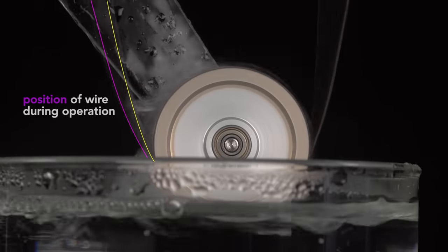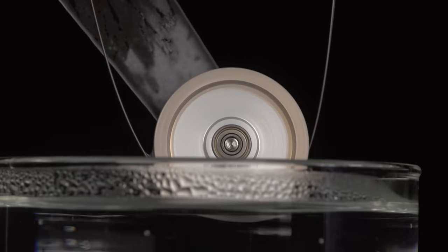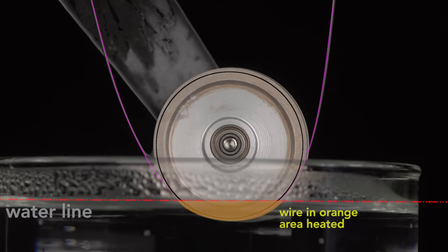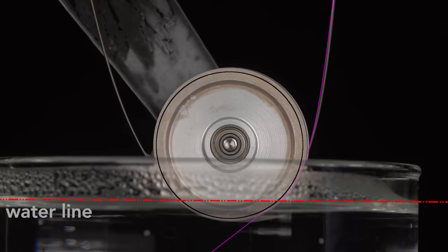This happens because when the bottom wheel comes into contact with the hot water, the section of the wire highlighted here in orange is heated. If it were not in a loop, then the wire would be straight like this. But because it's in a loop, as it tries to straighten, it exerts a force on the wheel, which causes it to turn.